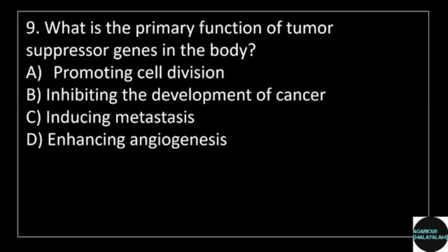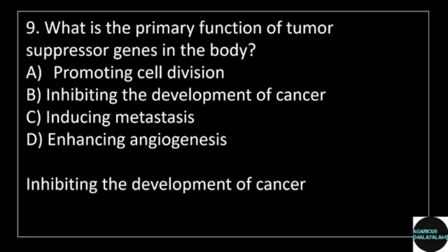Ninth question: what is the primary function of a tumor suppressor gene in the body? Answer options: option A, Promoting cell division; option B, Inhibiting the development of cancer; option C, Inducing metastasis; option D, Enhancing angiogenesis. Correct answer: option B, Inhibiting the development of cancer.